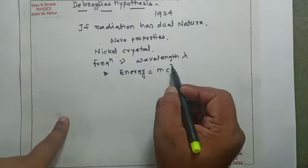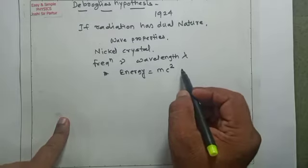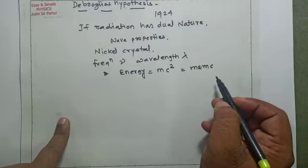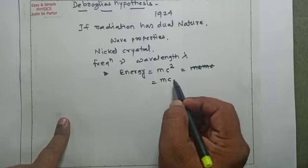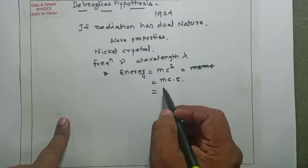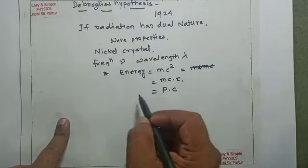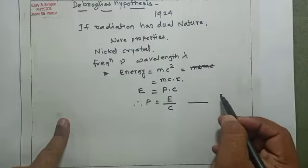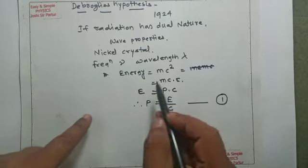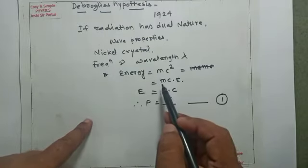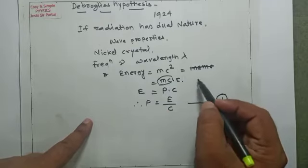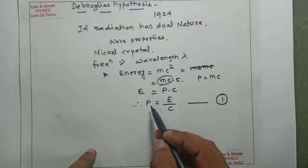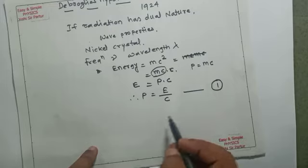According to Einstein's mass-energy relation, energy E is equal to mc². This means E = mc × c, so mc is linear momentum multiplied by velocity of light. Therefore E = pc, and so p = E/c. This is equation number one. Also, energy equals momentum into velocity, so momentum p = E/v.